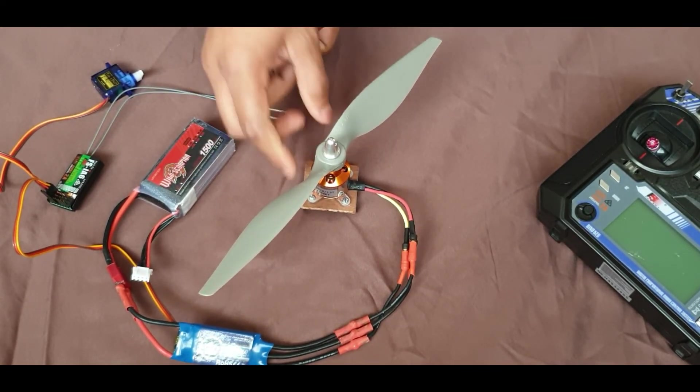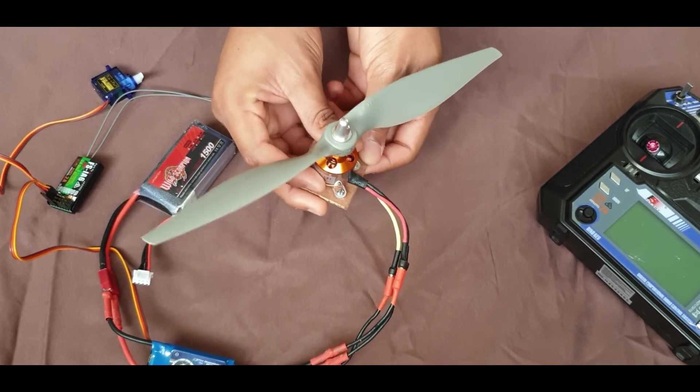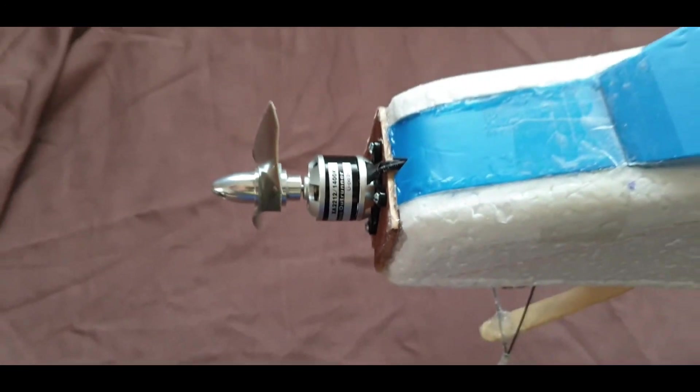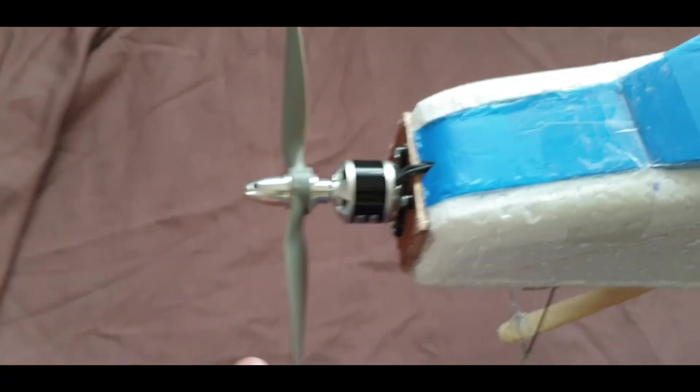So if you're a beginner I would recommend you to go with a 1000 kV motor and you're going to need a 9 to 10 inch prop but if you take a 1400 kV motor, you're going to need a smaller prop that's around 7 to 8 inches.